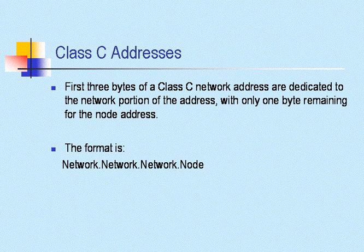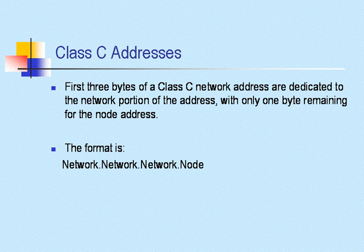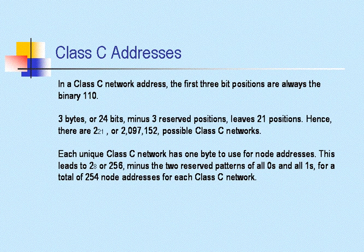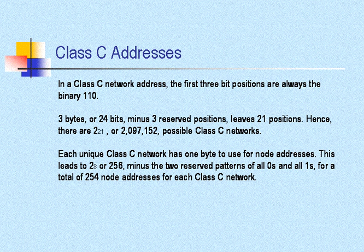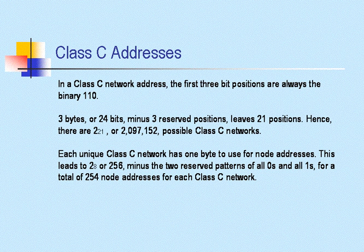For the Class C address, the first three bytes of a Class C network address are dedicated to the network portion — network, network, network, node. The first three bit positions are always binary 1, 1, 0. Three bytes — 24 bits — minus three reserved positions leaves 21 positions. Hence, there are 2 to the 21st power, or 2,097,152 possible Class C networks. Each unique Class C network has one byte for node addressing — 2 to the 8th, or 256, minus the two reserved patterns of all zeros and all ones — for a total of 254 node addresses per Class C network.